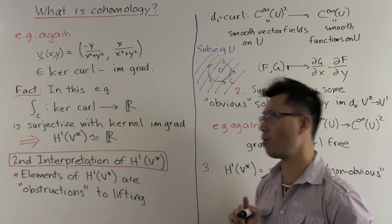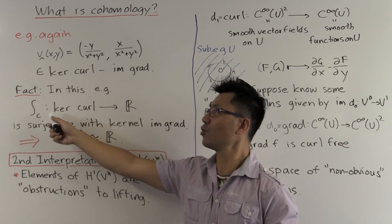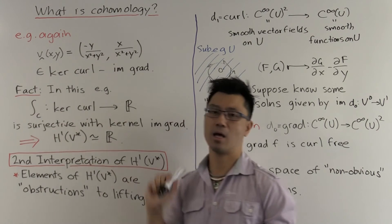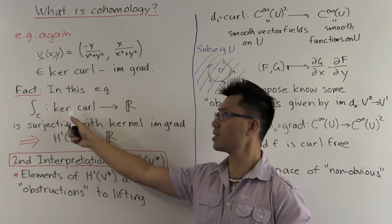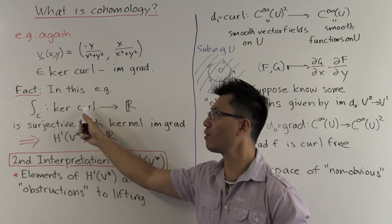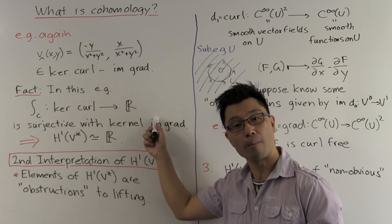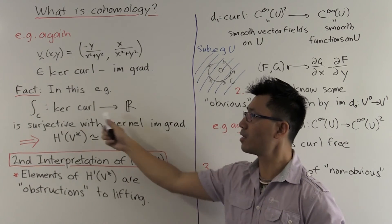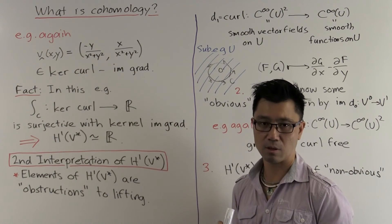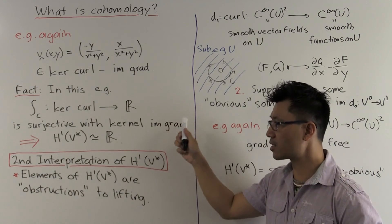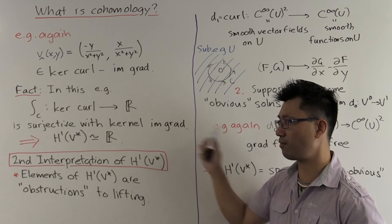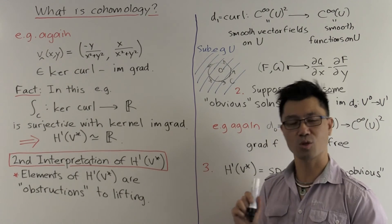In fact, you can say more. In fact, if you look at this integration as a function which sends curl-free vector fields, the kernel of this curl, to the real number, which is that integral, then this is actually surjective, and the kernel of this is precisely the image of this gradient function.